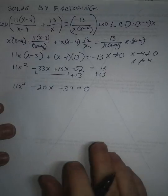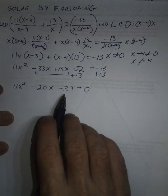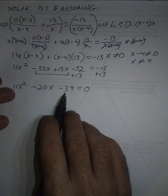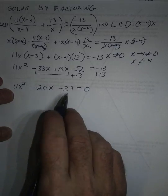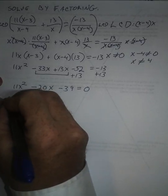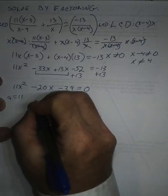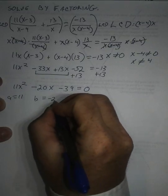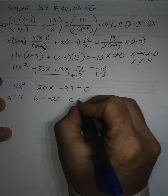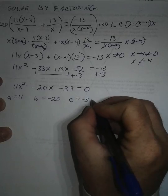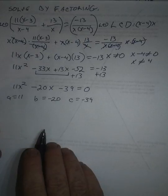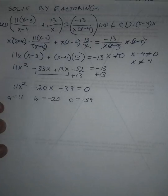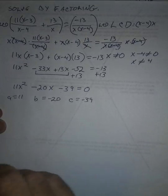This is where it gets nice and interesting here. We need to factor by grouping. So what we're looking at when we look at the AC method is A equals 11, B equals negative 20, and C equals negative 39. 11's prime. 39 is 3 times 13. That's the prime factorization of 39.